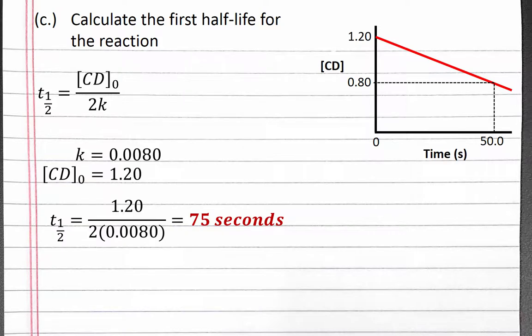For a zero-order reaction, each consecutive half-life will halve in time. The second half-life should then be 37.5 seconds, because the starting concentration for the second half-life is half of the starting concentration for the first half-life.